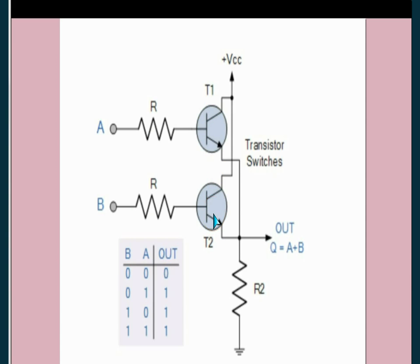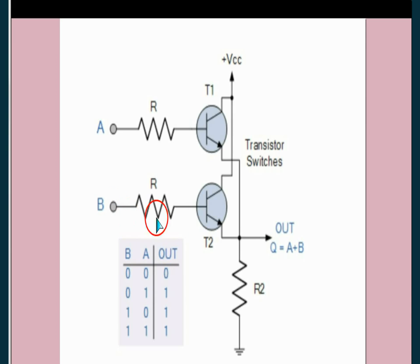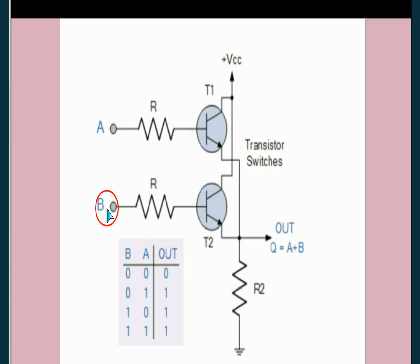The OR gate can also be realized using transistors. A transistor acts like a switch. If there is no voltage at the base, both transistors are off, no current flows, no output. If you give voltage at one transistor's base, it turns on, current flows, and the output comes to high potential. If you give potential to the other transistor, it also turns on and current flows to high potential — output is one.